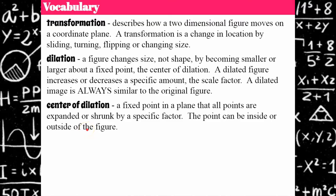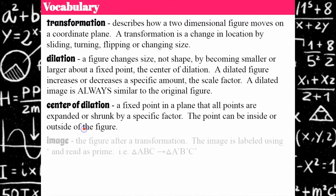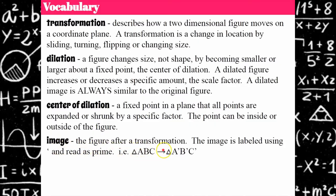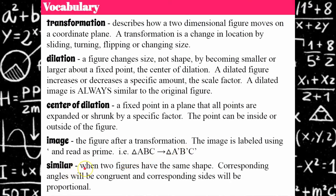When we do this in a coordinate plane, typically the center of dilation is the origin — everything is enlarged or reduced relative to the origin. For example, if I transform triangle ABC, it will transform to triangle A prime, B prime, C prime. Similar figures have the same shape: corresponding angles are congruent and corresponding sides are proportional.